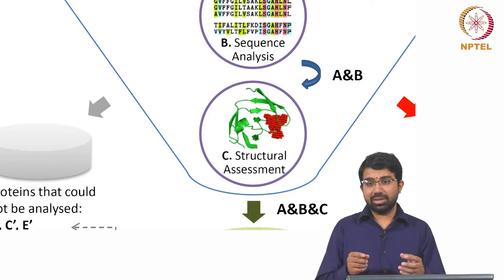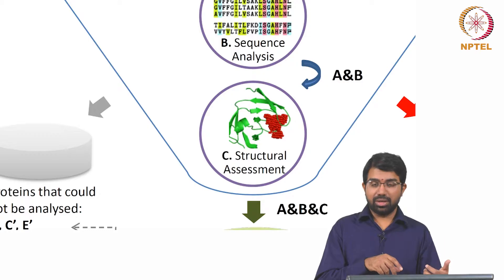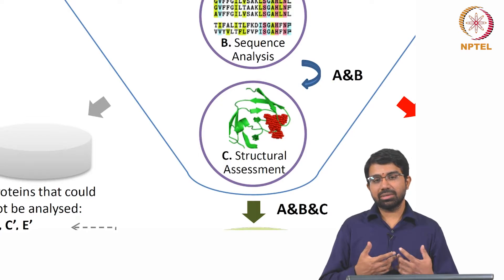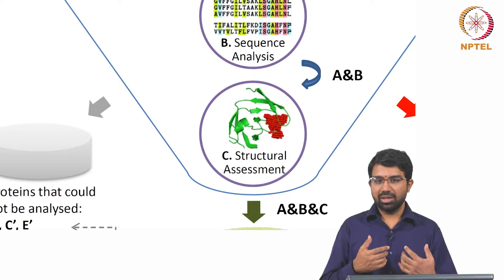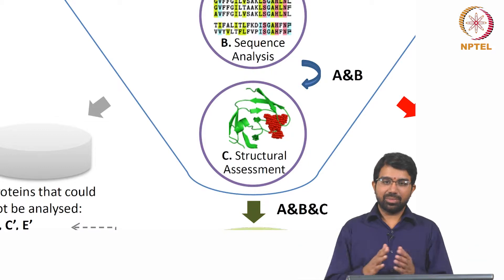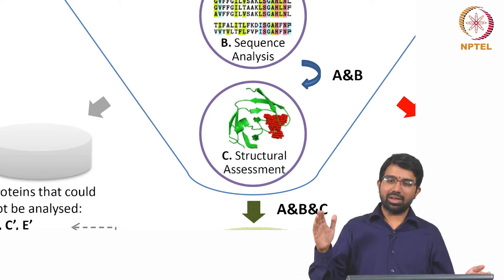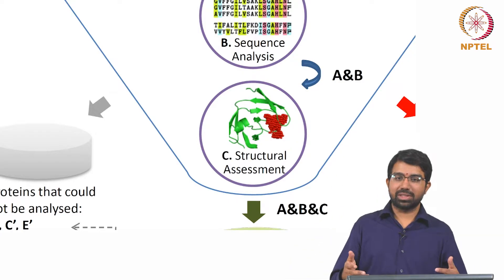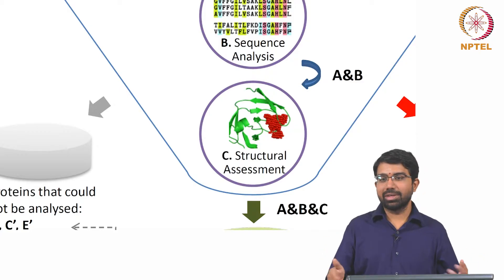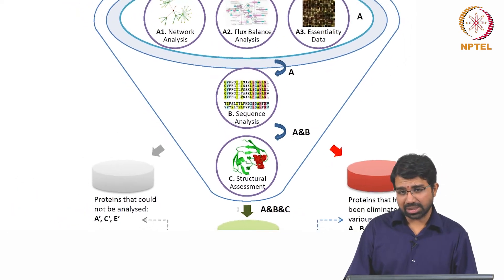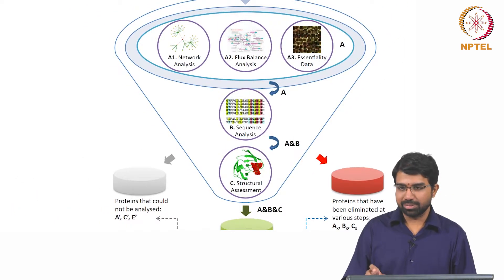If a TB protein had a pocket similar to a human protein, you do not want to use it, because the drug you design for that TB protein will end up binding to the human protein as well. It is possible to design a drug that selectively binds only to the TB protein, but that is harder work. Looking at the drug discovery pipeline, 95% of drugs fail, many at a later stage — it's a 10-year, 1.5 billion dollar pipeline with a lot of late-stage failure.